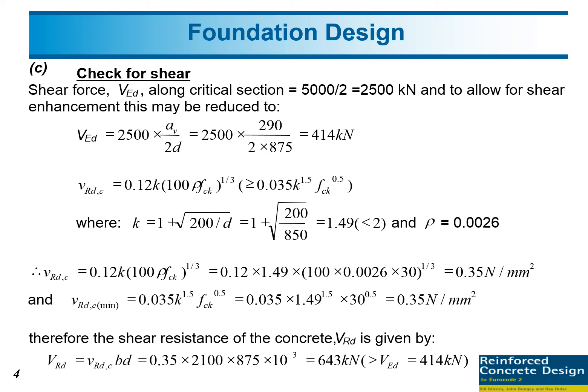VRDC we can get by using this equation: 0.12 times K times 100 times rho times FCK to the power 1/3, so we have 0.35 N per mm square. This is the shear strength of the concrete. VRDC minimum uses 0.035 times K to the power 1.5 times square root of FCK. We have 0.35, so we take this value because they are equal, so we take 0.35 N per mm square.